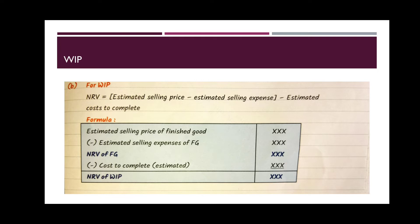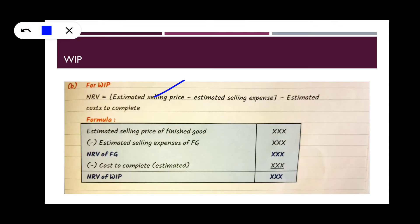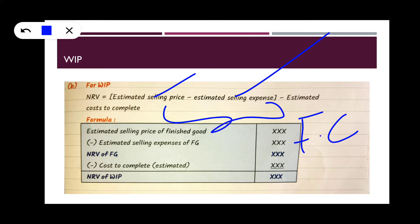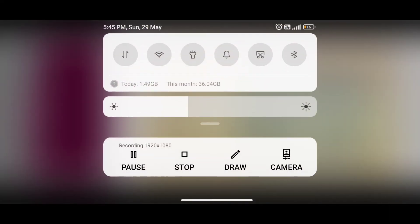For work in progress — for example, a biscuit not yet fully produced on 31st March — how do we calculate NRV? The formula is: Estimated Selling Price minus Estimated Selling Expenses (that gives the NRV of finished goods), and then we reduce the estimated cost to complete. For example, if NRV of finished goods is 100 and additional cost to complete is 40, then WIP NRV is 60.